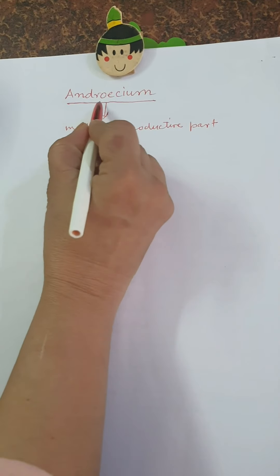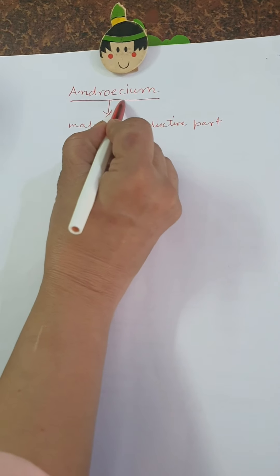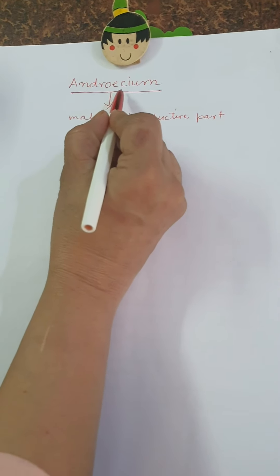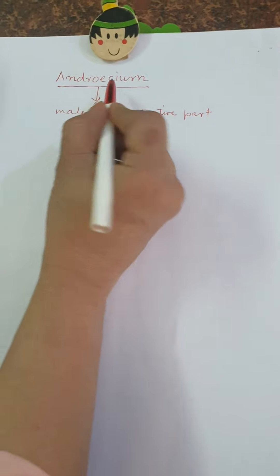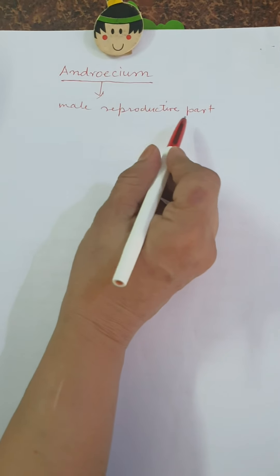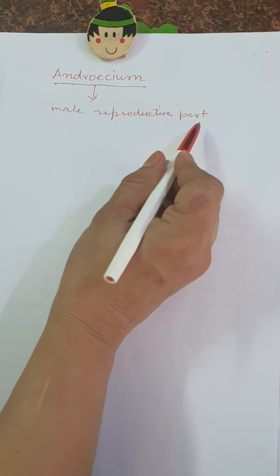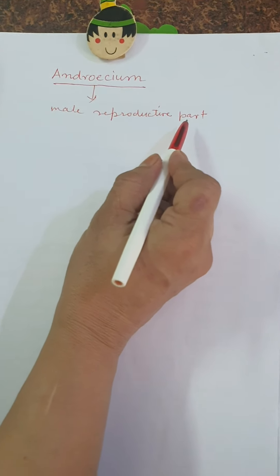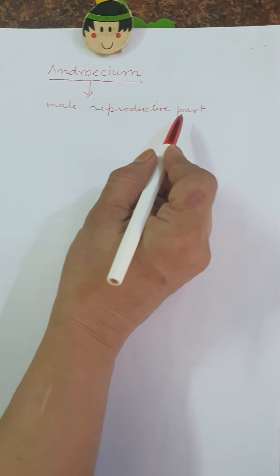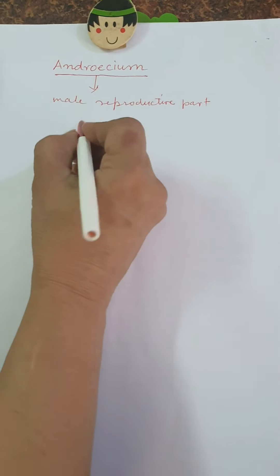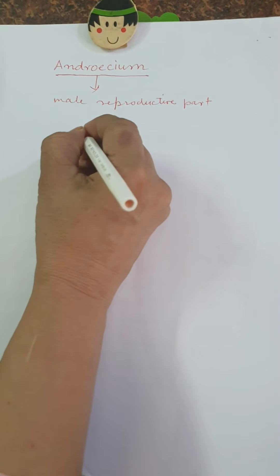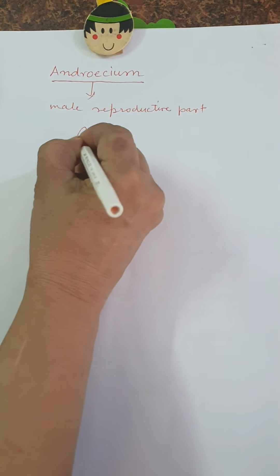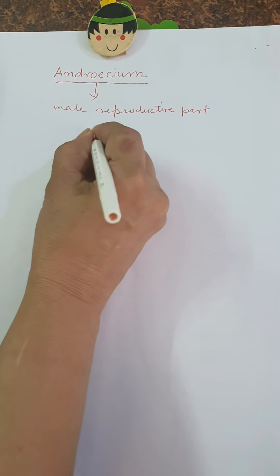Today's topic is androecium. Androecium is the essential whorl of the plant. It is the male reproductive part of the flower. It is made up of anther and filament.